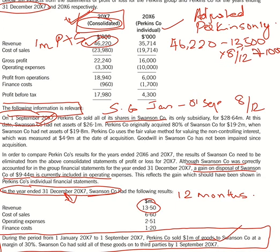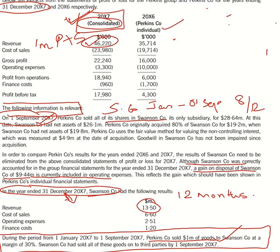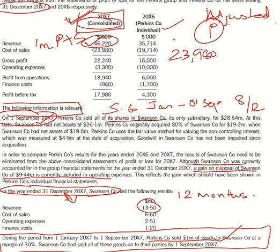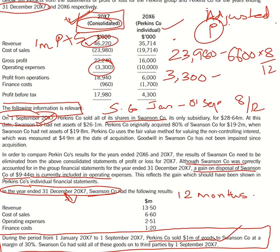I have shown this working in the Google Classroom, and I am now showing how to arrive at the adjusted figures for P Company only. Consolidated cost of sales is 23,980 minus the subsidiary's cost of sales of 6,600 multiplied by 8/12. For operating expenses: 3,300 minus the subsidiary's operating expenses of 2,510 multiplied by 8/12.